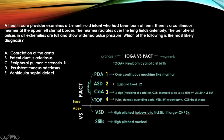The answer to the next question is patent ductus arteriosus. The dead giveaway is the continuous murmur at the upper left sternal border. On the pediatric chart, PDA = one continuous machine-like murmur.